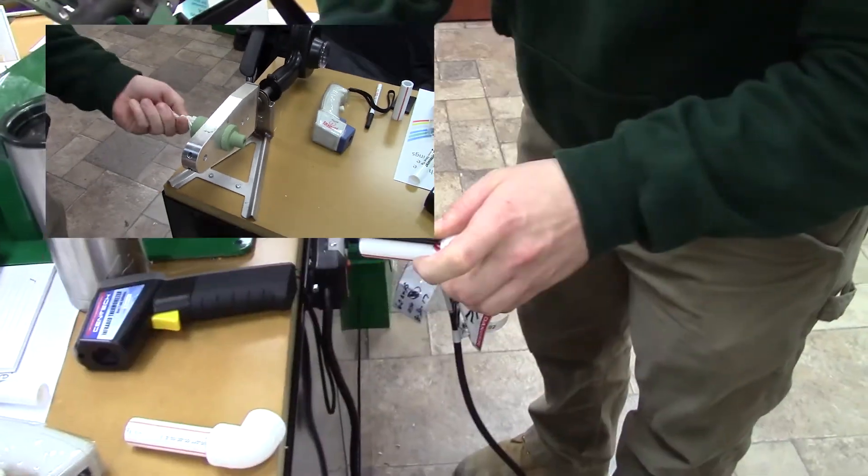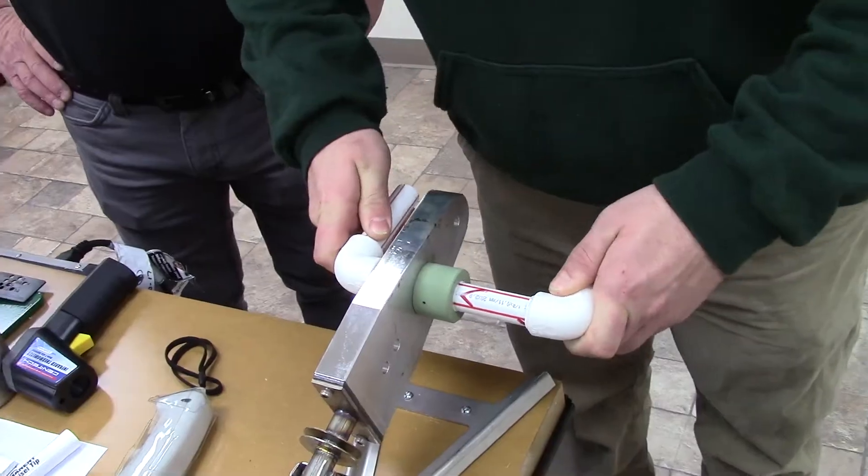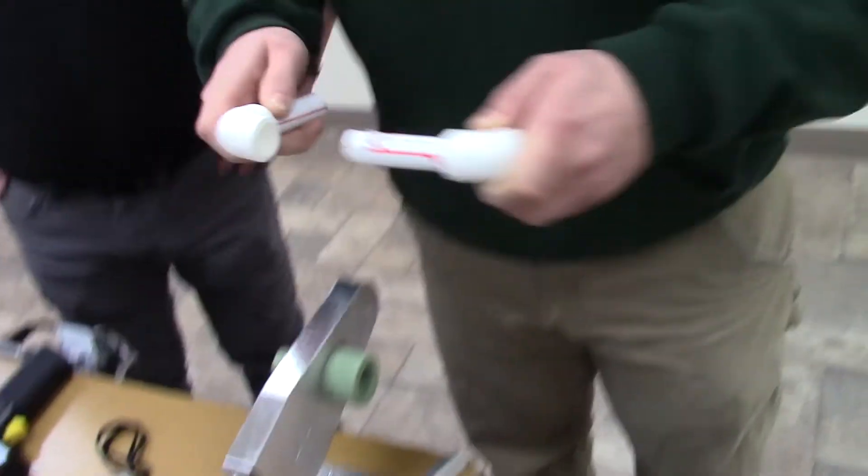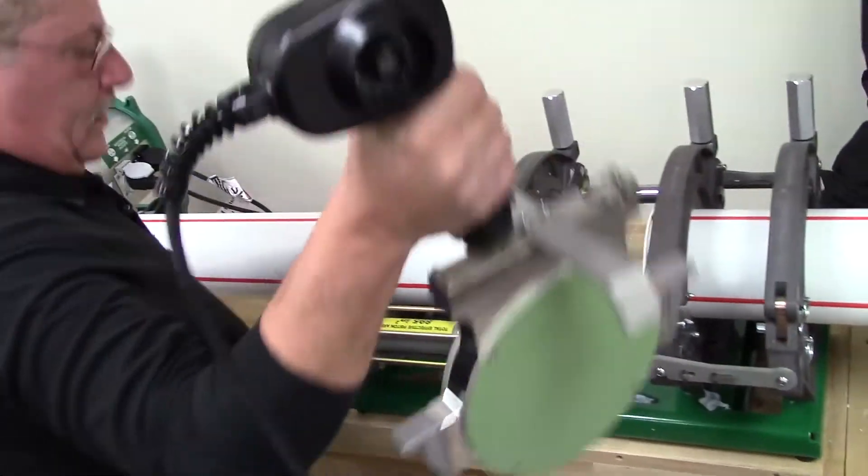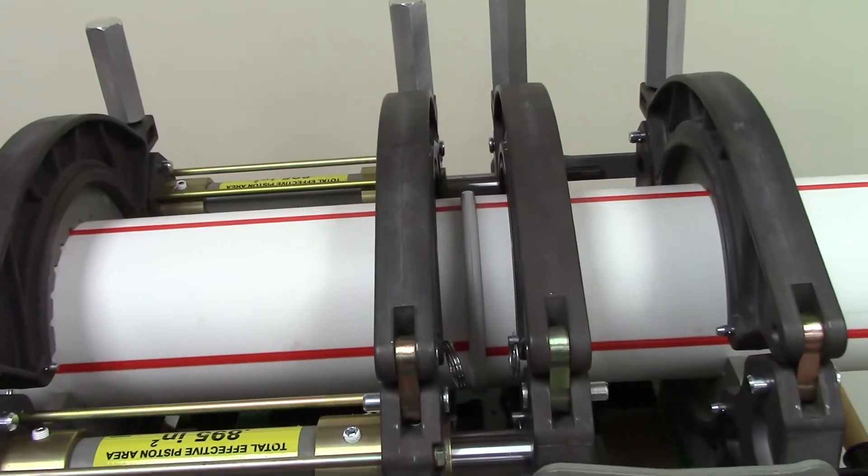There are two methods for fusing piping. Up to 4 inch, we usually use a method called socket fusion, and 5 inch and larger, we usually use a method called butt fusion.